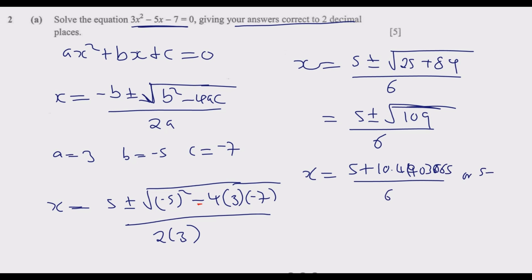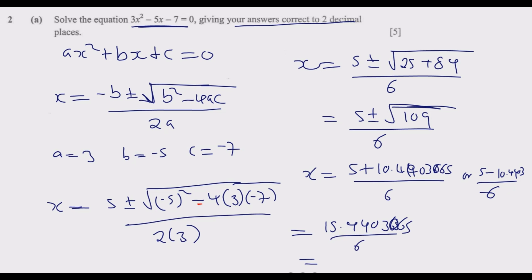The square root of 109 is approximately 10.44030065. So x equals 5 plus 10.44030065 over 6, giving 15.44030065 over 6, which simplifies to approximately 2.57 to two decimal places. For the second solution: 5 minus 10.44030065 over 6 gives negative 5.44030065 over 6, which equals approximately negative 0.91 to two decimal places.